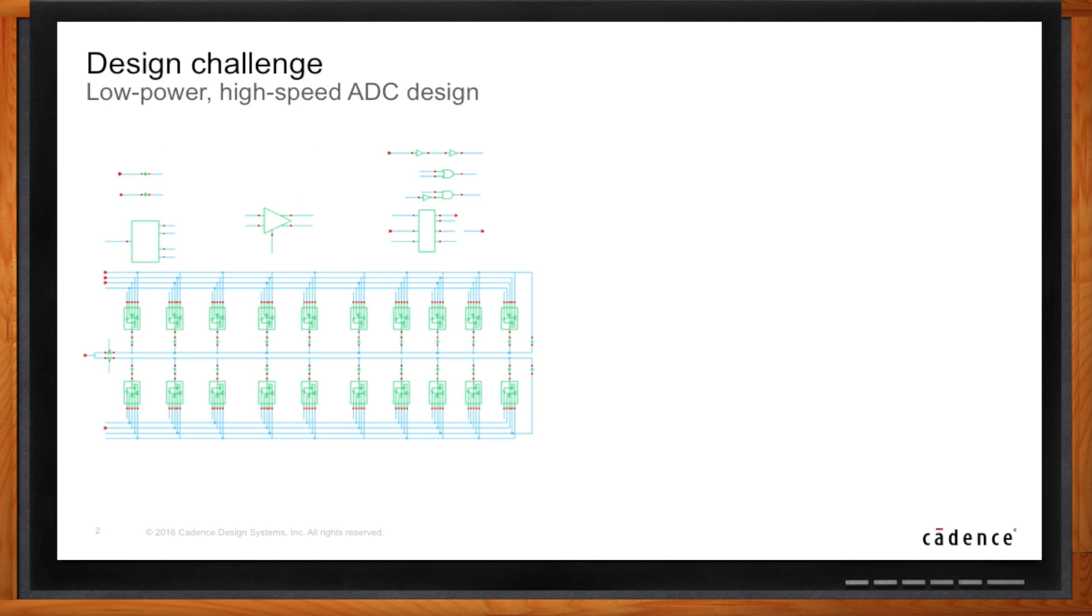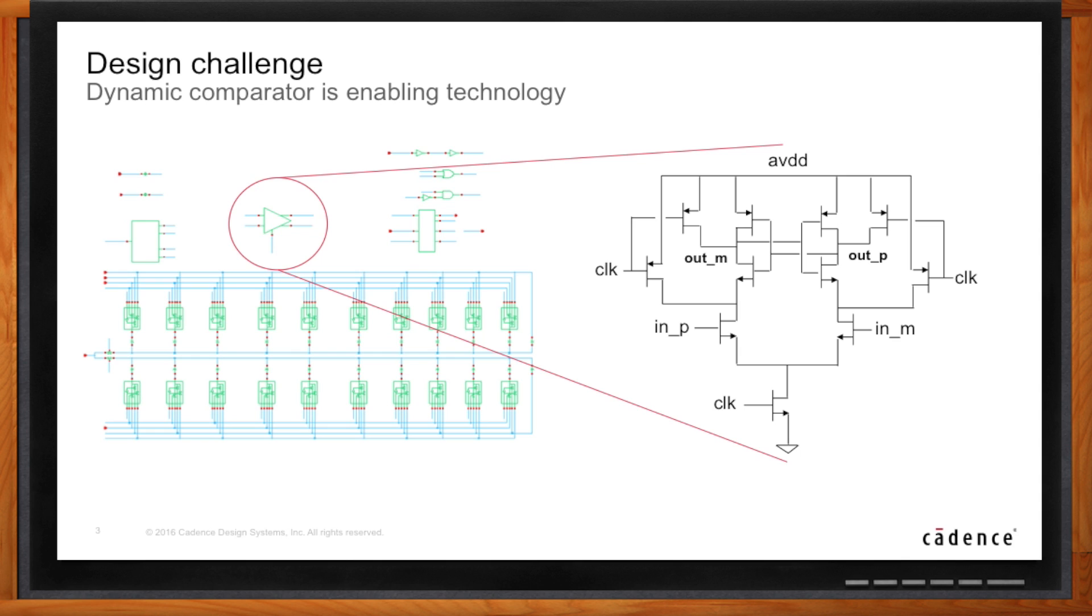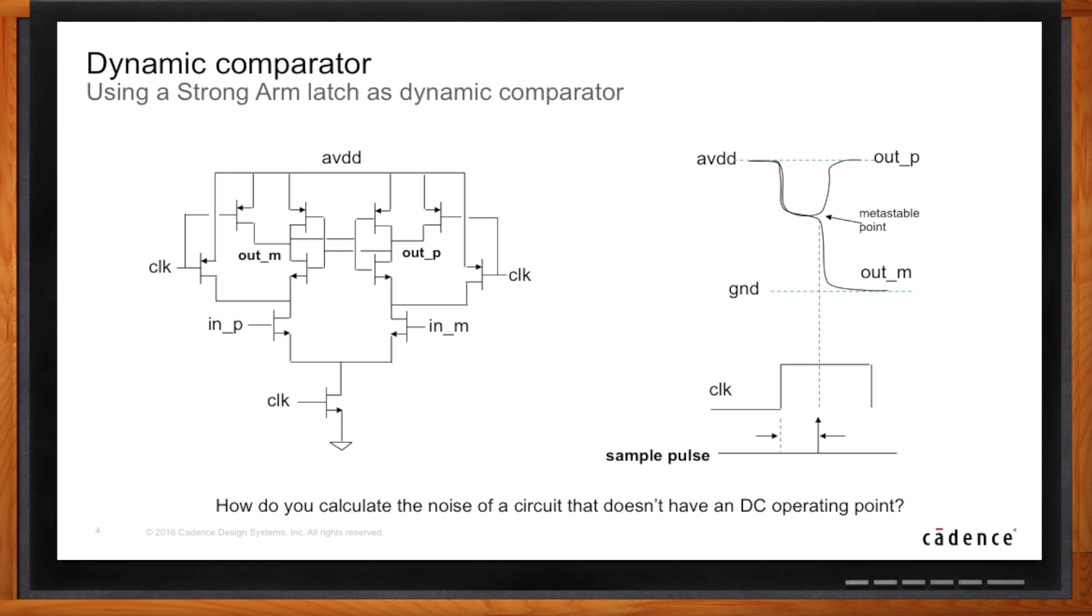Let's start by talking about the ADC you want to design. It's probably going to be a successive approximation ADC. These have no DC power, and they're very fast. But where does this noise come from? Usually the noisiest block in the ADC is the dynamic comparator, and that's the block we're looking at now.